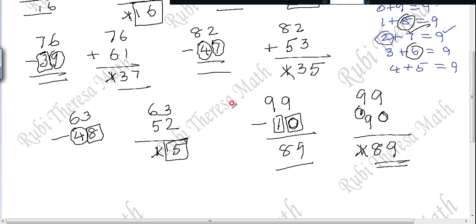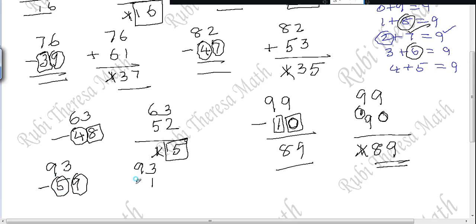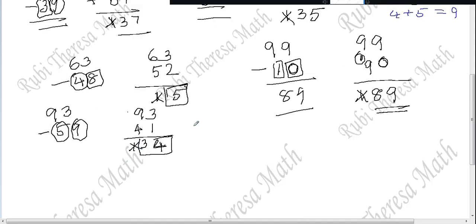Next: 93 minus 59. Write 93. Complement of 9 to make 10 is 1. Complement of 5 to make 9 is 4. So write 4. Add: 9 plus 1 is 10, 10 plus 3 is 13. When you strike it out, 34 is the answer. Just recall it and do it.